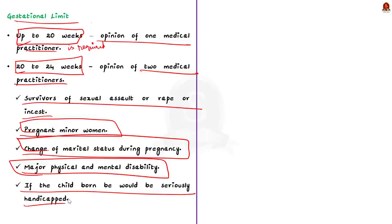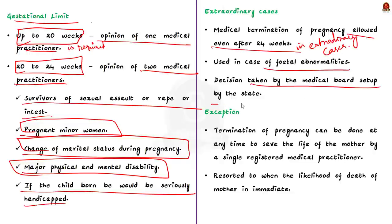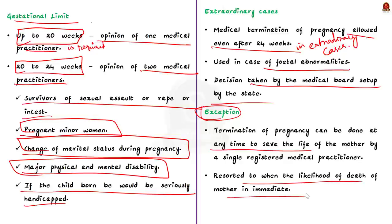What happens even after the 24-week limit? Pregnancy termination is allowed in some extraordinary cases even after 24 weeks. When medical termination of pregnancy is sought after the 24-week limit in case of fetal abnormalities, decisions should be taken by a medical board set up in each state as per the MTP Act. Finally, the Act provides for an exception: termination of pregnancy can be done at any time to save the life of the mother by a single registered medical practitioner, and this exception is resorted to only when the likelihood of the pregnant woman dying is immediate.